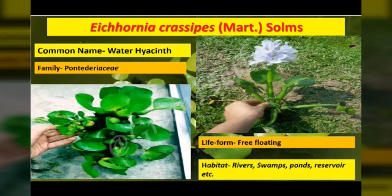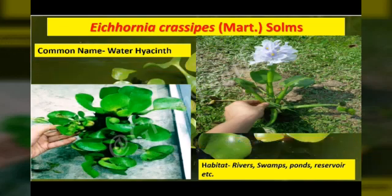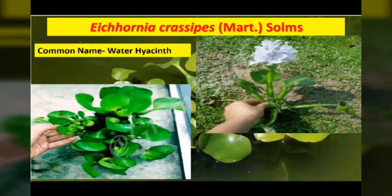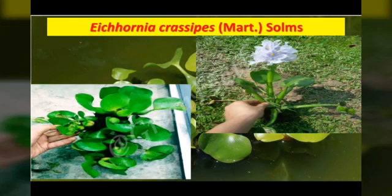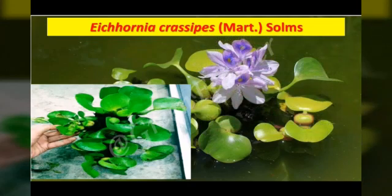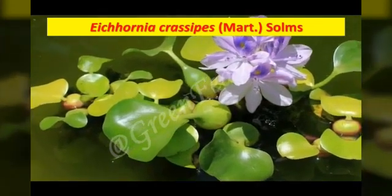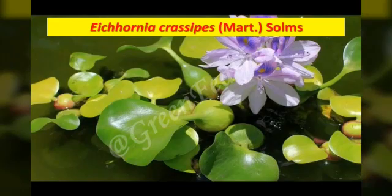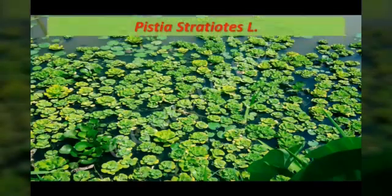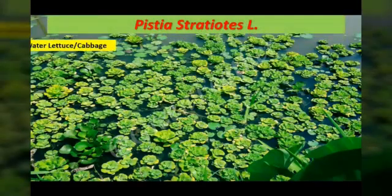Water hyacinth is regarded as one of the worst aquatic weeds in freshwater habitats, as it can quickly form dense floating mats over water surfaces, causing significant ecological disturbance. Pistia stratiotes, commonly known as water lettuce or water cabbage, is another common free-floating aquatic plant.